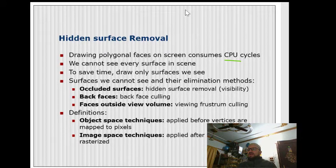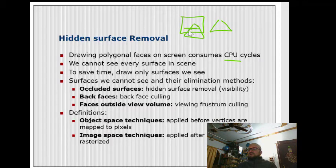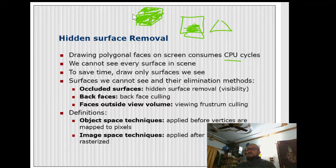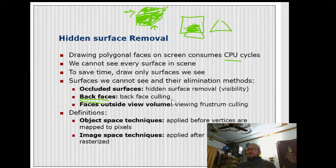There can be occluded surfaces. For example, there is a triangle behind another shape — that part will not be visible, so I don't need to draw it. Or there is a solid, non-transparent cube — the back faces will not be visible, so I shouldn't be drawing the back face or bottom face.